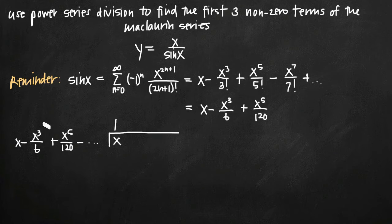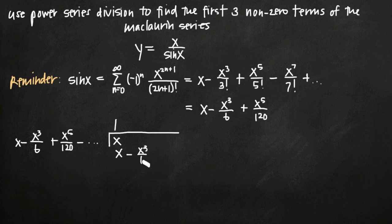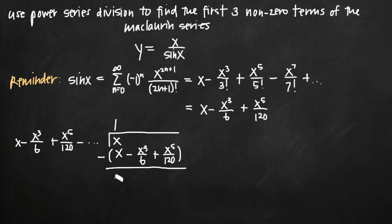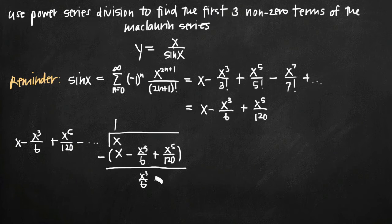Obviously we just multiply x by 1, so we put 1 up top. Then we multiply 1 by everything: 1 times x is x, 1 times negative x cubed over 6 is negative x cubed over 6, and then plus x to the fifth over 120. Now we subtract what we just got from x. x minus x gives us 0, and then 0 minus negative x cubed over 6 is positive x cubed over 6. Then 0 minus x to the fifth over 120 is minus x to the fifth over 120.